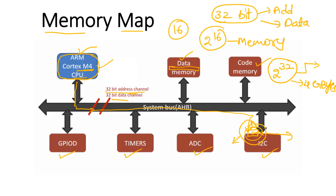After selecting the register, the ARM Cortex-M4 processor can read the data present in it through the 32-bit data bus and store it in one of its core registers. In ARM Cortex-M4, some core registers are there — R0, R1, R2. I explained already about core registers in one of my previous videos; the link will be in the description and cards. After reading the data from the I2C register, you have to store that data into one of the core registers of Cortex-M4.